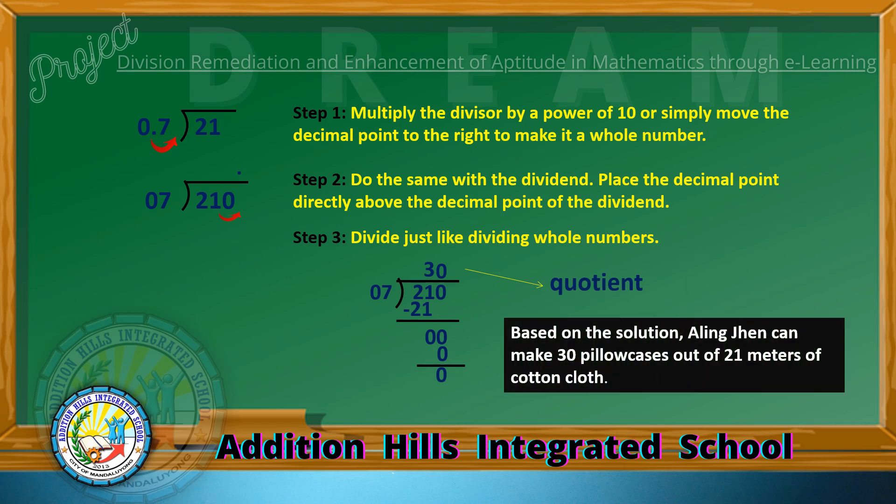Based on the solution, Aling Jen can make 30 pillowcases out of 21 meters of cotton cloth.